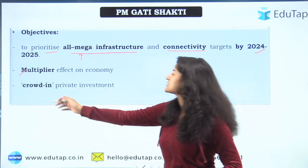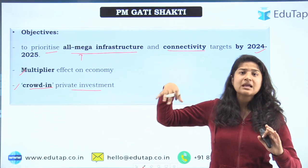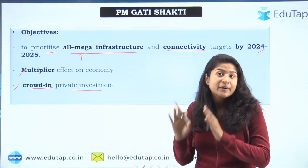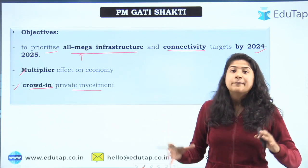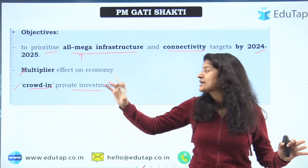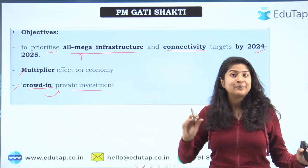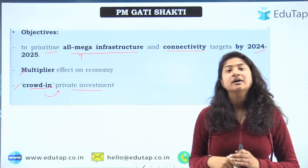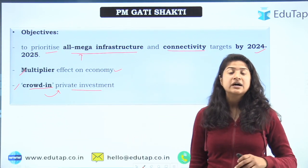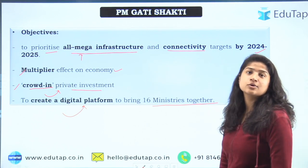The second aspect connects to the third objective: to crowd in private investment. Initially there was no timeline — a department would install pipelines in their own time. But now, because it is a step-by-step process, there is pressure on departments to do the work on time. When the private sector knows that demand for raw materials will be fulfilled on schedule, they also feel there is profit in that business. This not only saves government money but also provides jobs to laborers and job seekers.